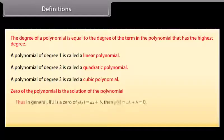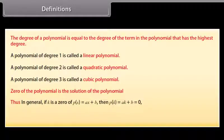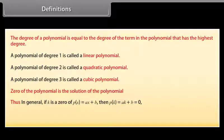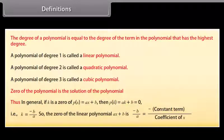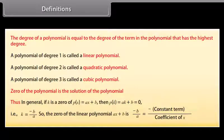The zero of the polynomial is the solution of the polynomial. In general, if k is a zero of p(x) which equals ax plus b, then p(k) equals ak plus b which equals zero. That is, k equals minus b upon a. So the zero of the linear polynomial ax plus b is minus b upon a, which equals minus constant term upon coefficient of x.